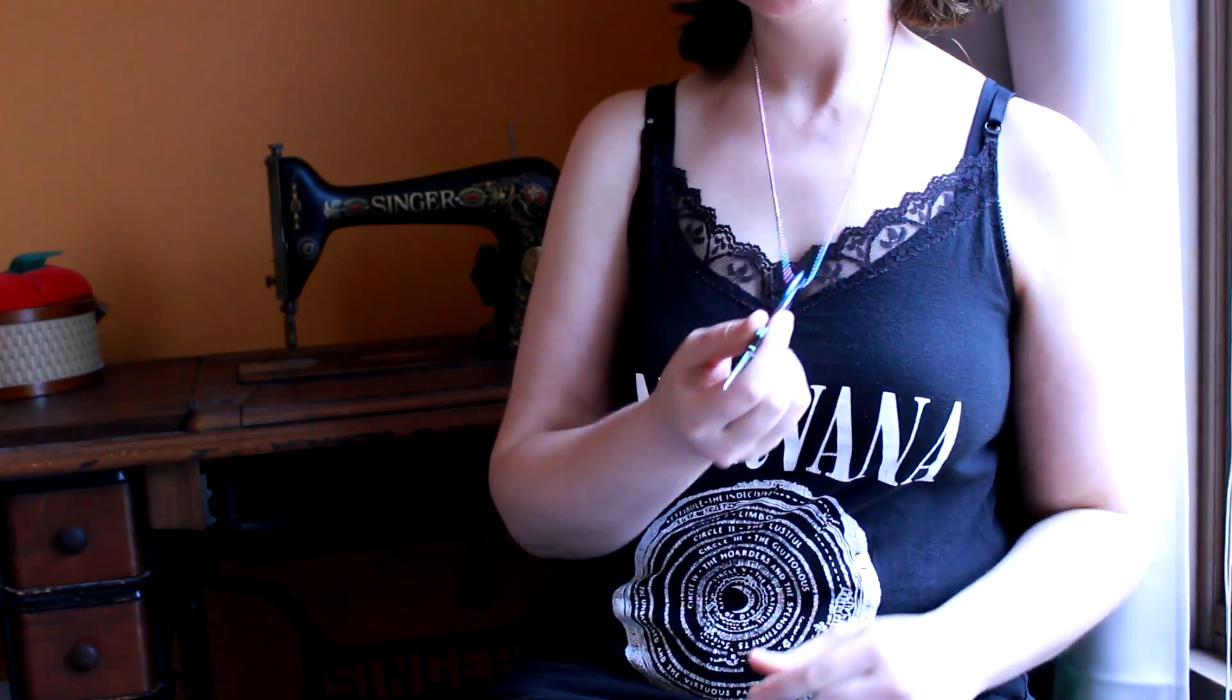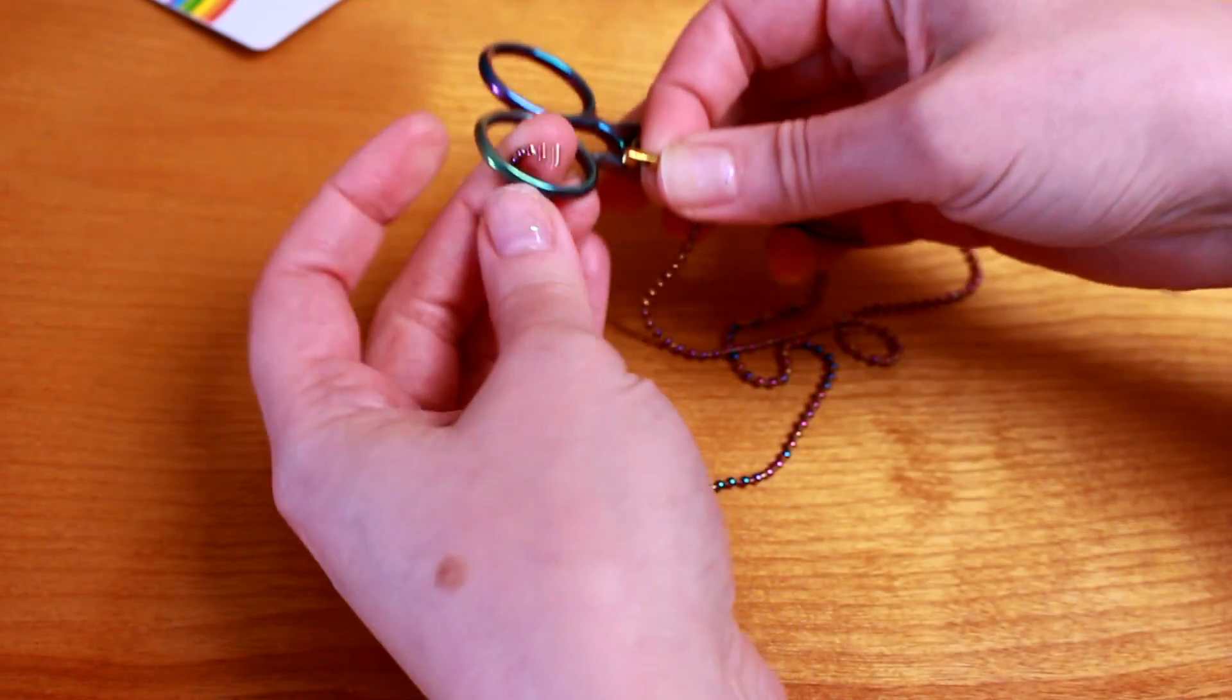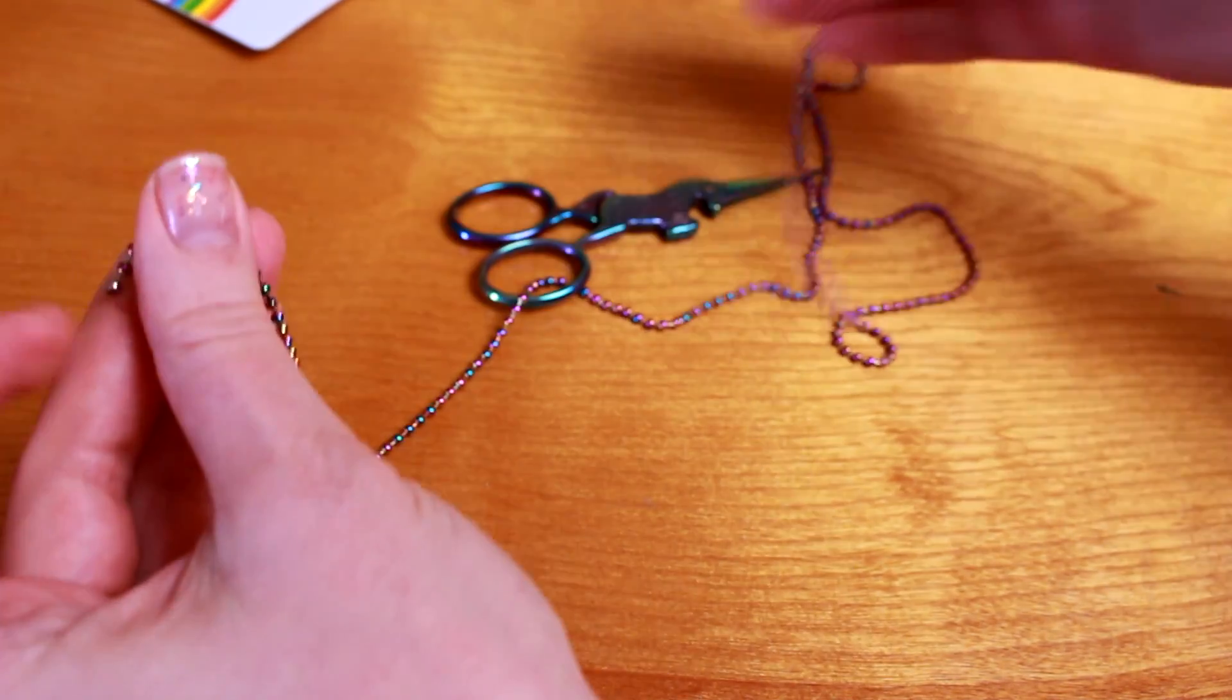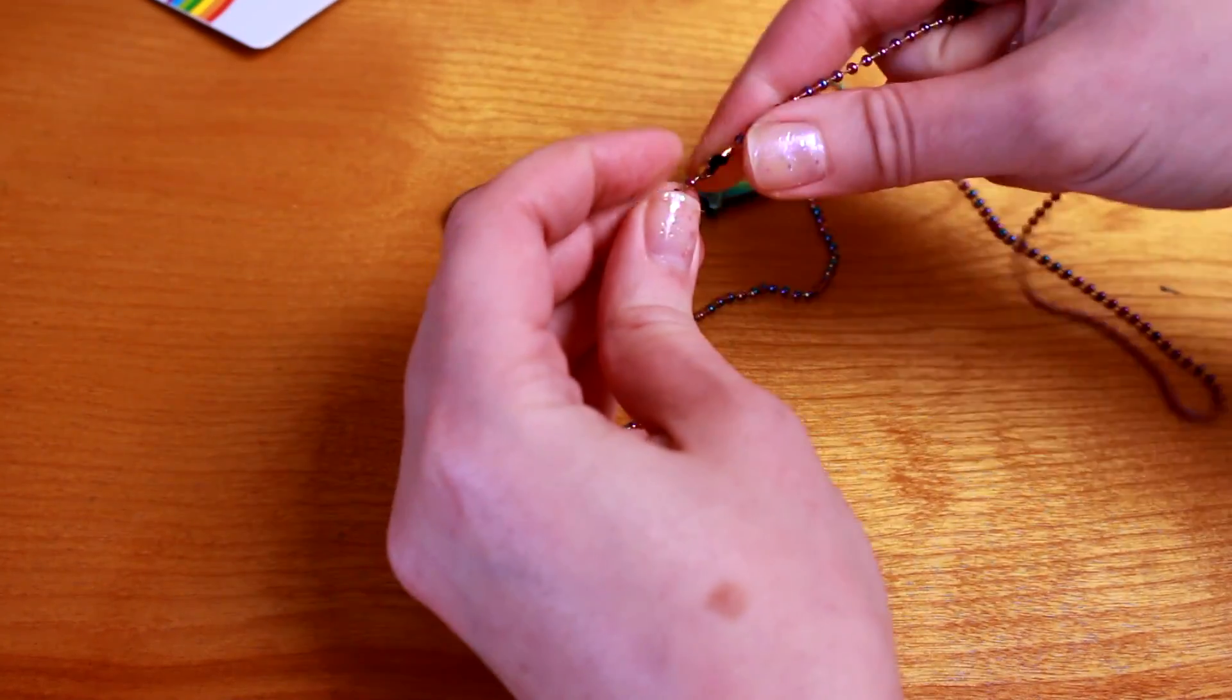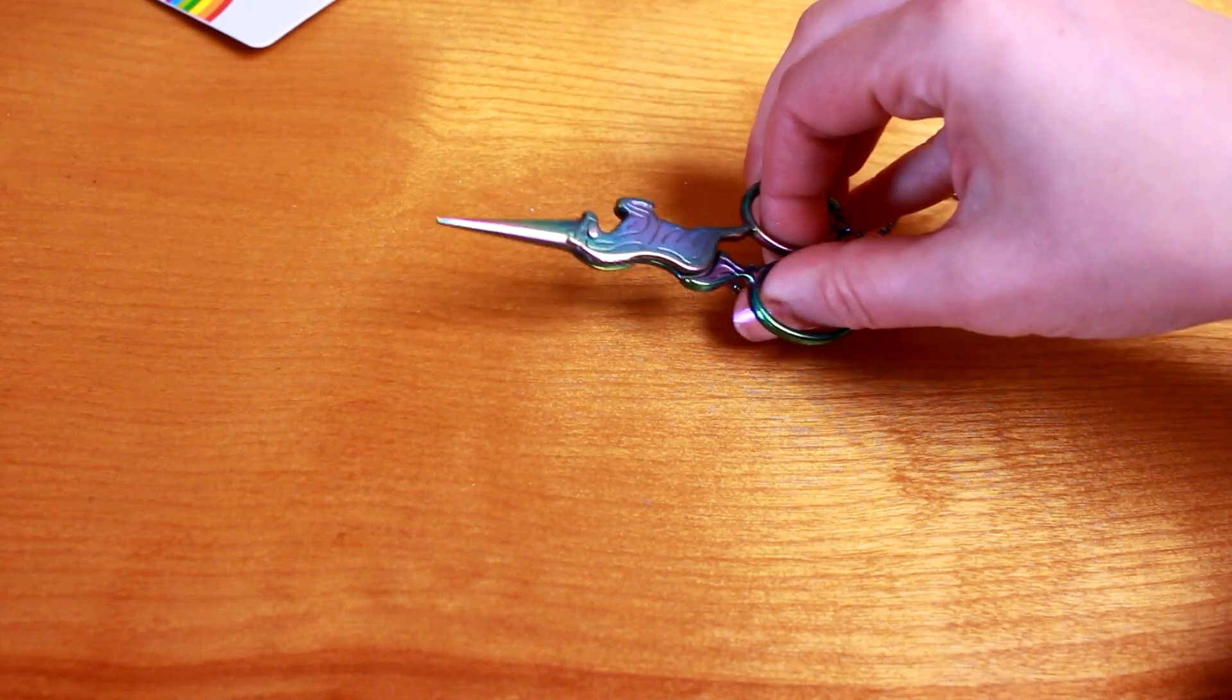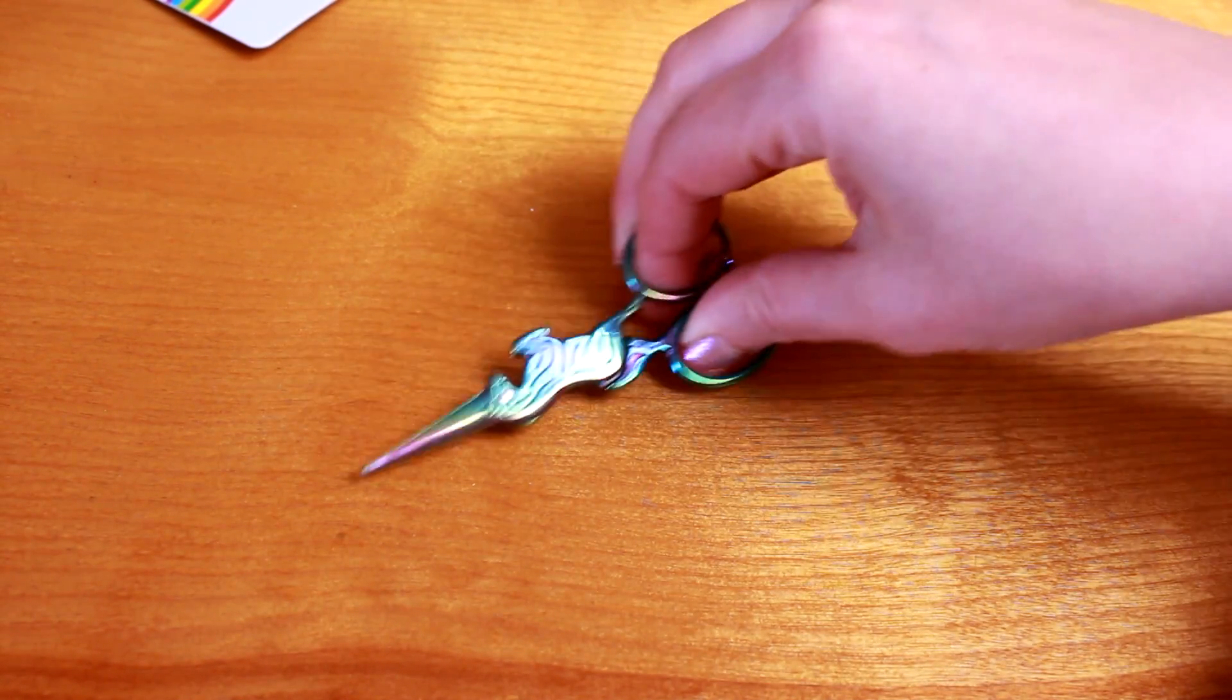For a ridiculously easy version, you can get a ball chain which requires no extra tools because the closure is built in. You just thread one end of the chain through one of the finger holes and voila! A handy-dandy pair of scissors you can wear around your neck. And a spiffy iridescent unicorn shape is a major bonus.